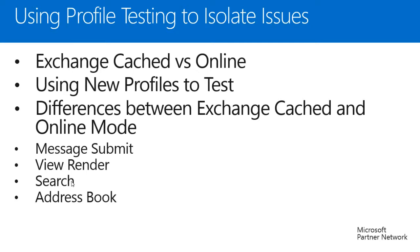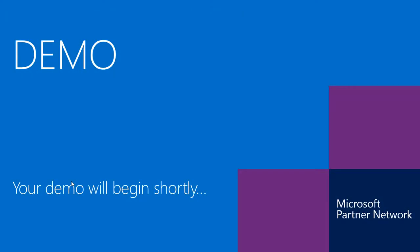The last difference I'll mention is address book. In exchange cached mode, Outlook uses the local offline address book files, or OAB, if they are present on the system. If you are using an exchange online mode profile, Outlook uses the GAL, which is comprised of Active Directory data returned from the catalog server. With that, let's move on to a demo and take a look at how some of these things work.